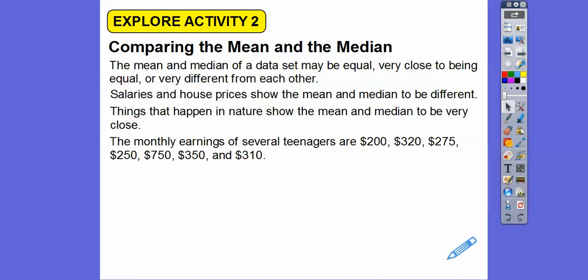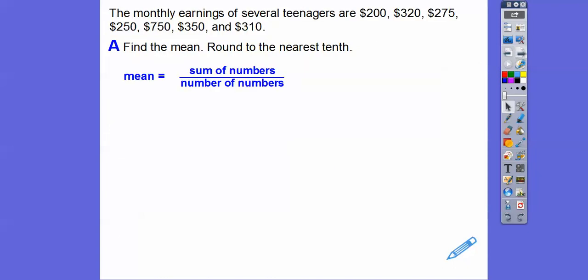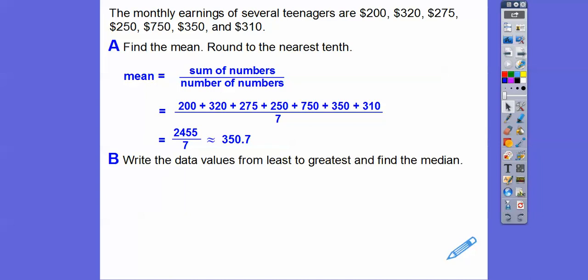So here we go. The monthly earnings of several teenagers are $200, $320, $275, $250, $750, $350, and $310. Let's find the mean first, and we're going to round it to the nearest tenth. To the nearest tenth means one decimal over. So let's add them all up and then divide by the number of numbers right there. There's seven numbers. So when we do that, we get about 350.7. Now let's find the data, let's rearrange them from least to greatest to find the median. So when I rearrange them, there they are from order from least to greatest. And then we just find the middle number right there. So the middle number is 310.